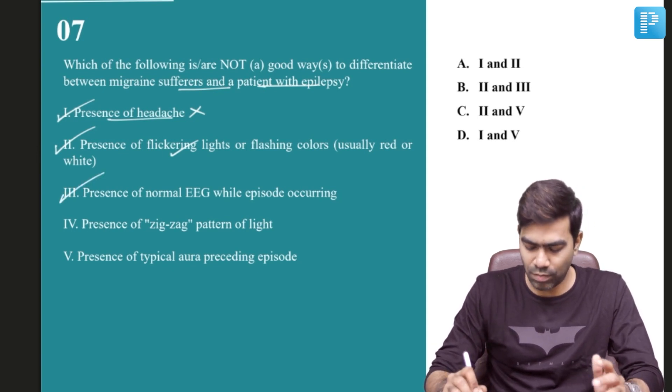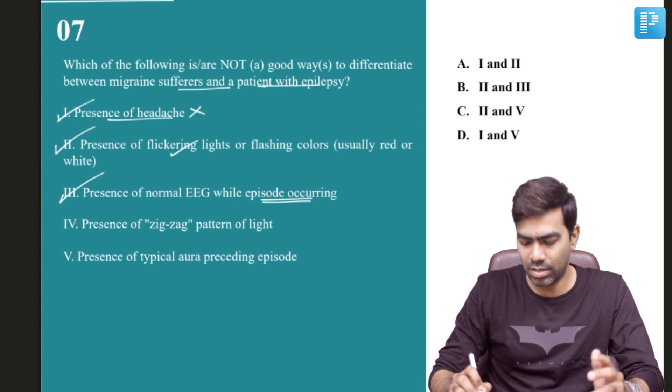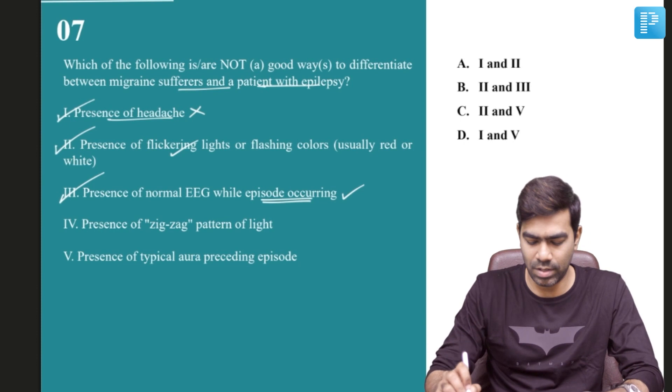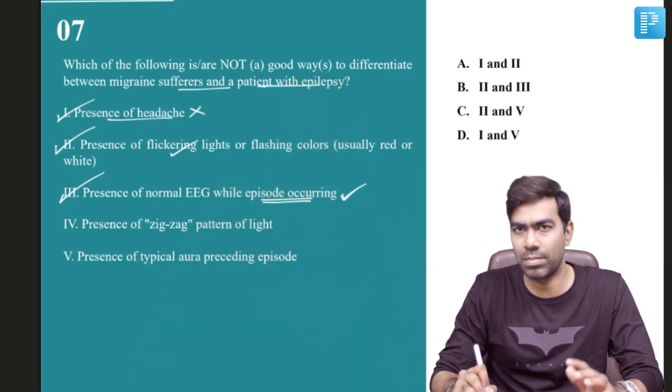Statement 3: presence of a normal EEG while the episode is occurring can be helpful to differentiate migraine and epilepsy — this is also correct. If you have a normal EEG while the episode is occurring and you are thinking it is a seizure, it is very unlikely to be a seizure, because during the ictal phase the EEG must be abnormal showing epileptiform spikes. The inter-ictal EEG may be normal even in a patient with epilepsy, but the ictal EEG generally will be abnormal. If the ictal EEG is normal at the time of that particular episode, it is very likely to be some other diagnosis like migraine. So this can differentiate between migraine and epilepsy.